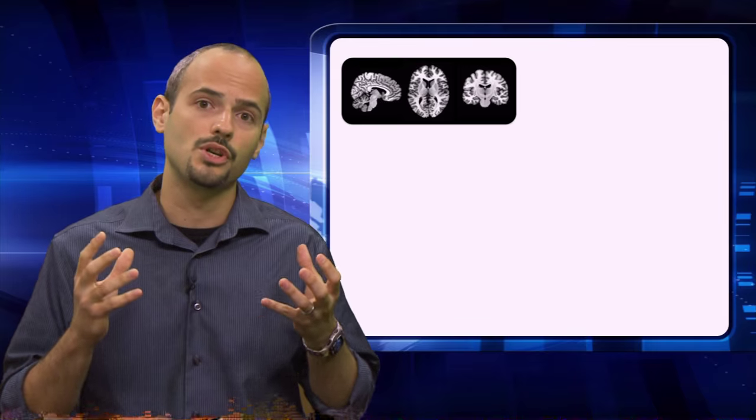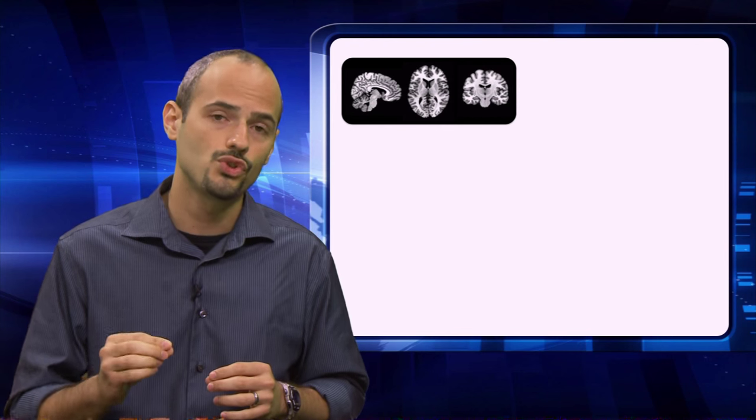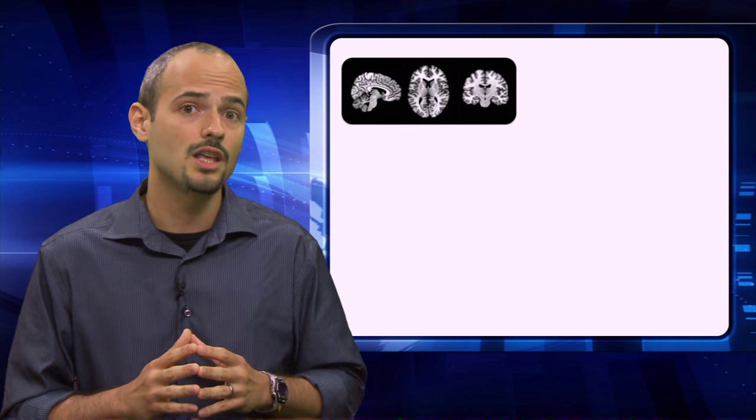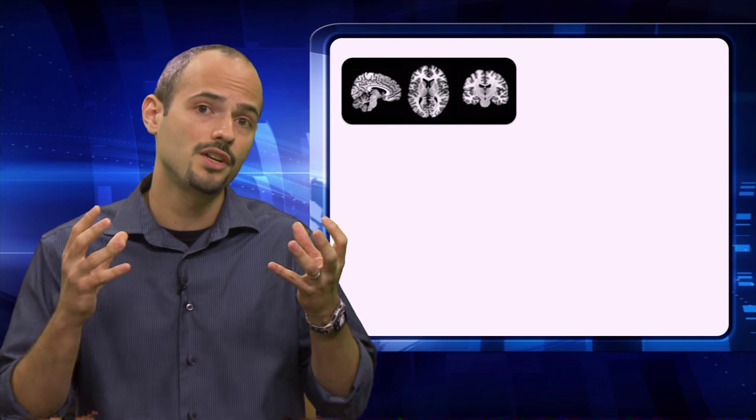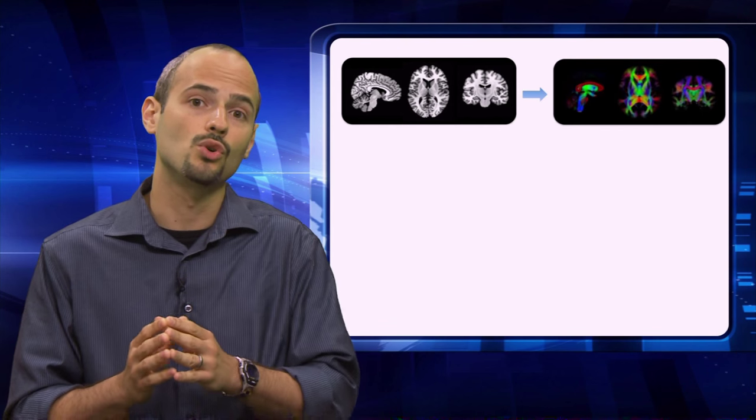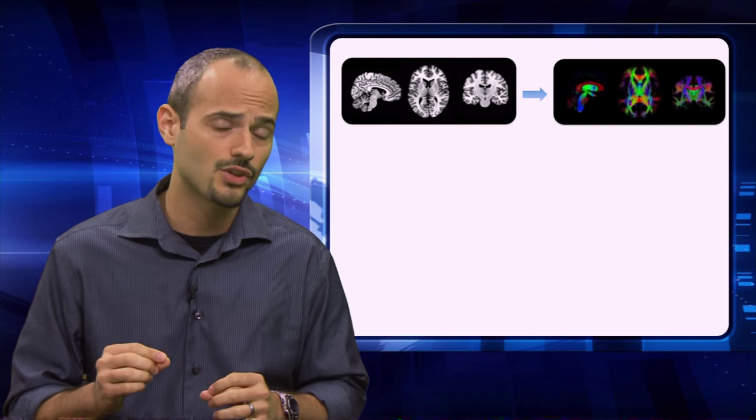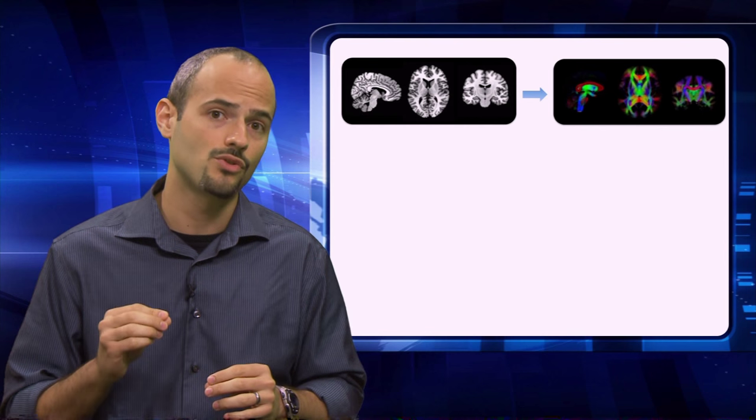The brain imaging that we're going to be using is called Diffusion Tractography Imaging, or DTI. DTI uses properties of water diffusion to infer the orientation of different connections in the brain. These connections are called white fiber tracts.